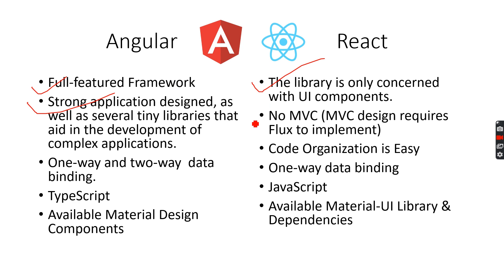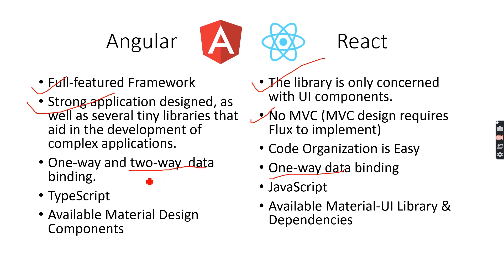If you want to implement MVC in React, you have to implement the Flux library. The second important and powerful feature Angular supports is two-way binding, while React only has one-way binding. In further videos we will see what two-way binding is in Angular and why it is more powerful.